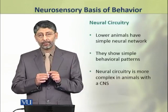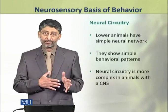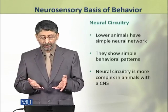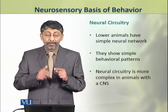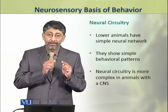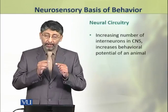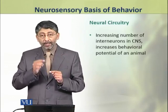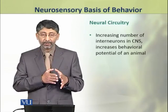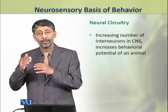Lower animals have simple neural networks, so they show simple behavioral patterns. However, the neural circuitry in more complex animals with a central nervous system is highly complex. In higher animals, the number of interneurons in the central nervous system has increased, which has increased the complexity of their behavioral patterns.